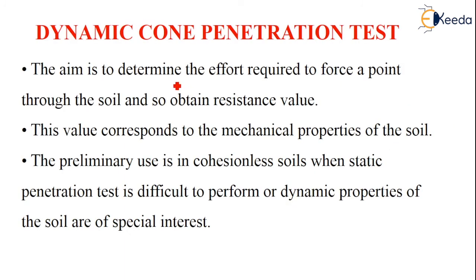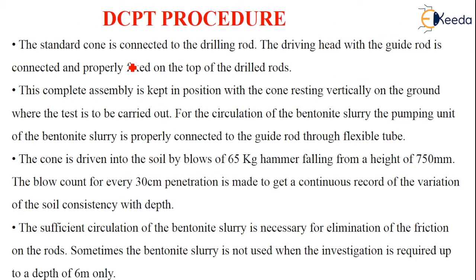The next method is the Dynamic Cone Penetration Test (DCPT). The aim is to determine the effort required to force a cone into the soil and obtain the resistance value, which corresponds to the mechanical properties of the soil. This test is primarily used in cohesionless soils when static penetration is difficult or when dynamic soil properties are of special interest. The standard cone is connected to the drilling rod, the driving head with guide rod is fixed to the top, and the complete assembly is positioned vertically with the cone resting on the ground where the test is to be carried out.